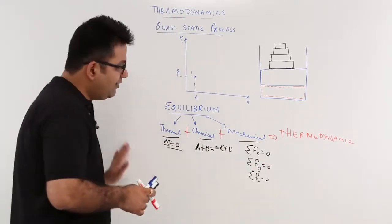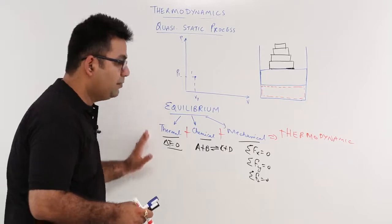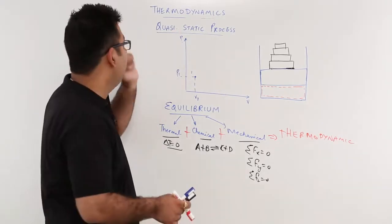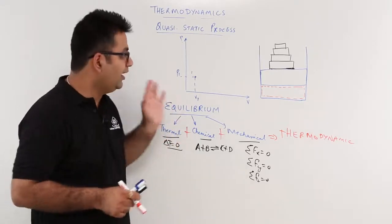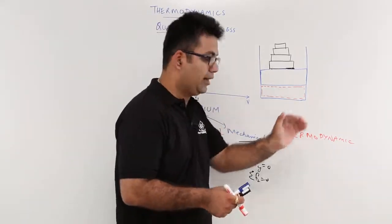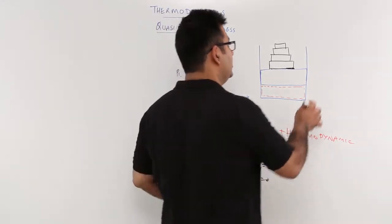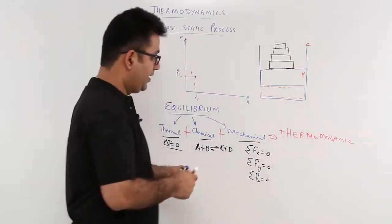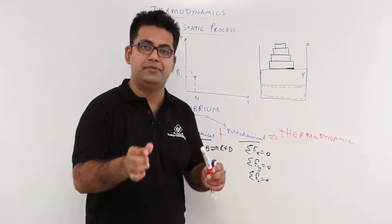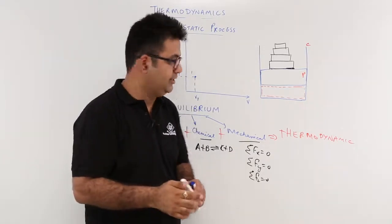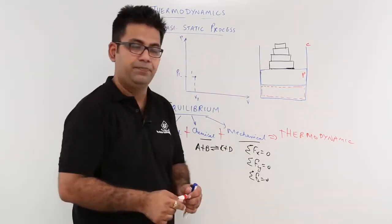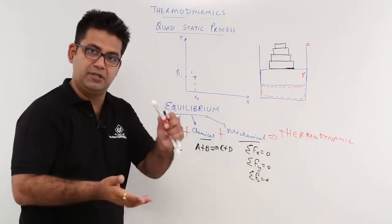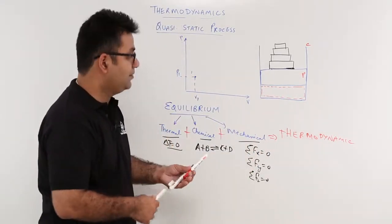After having understood the concept of equilibrium, let's move on to understand the quasi-static process. For that, let us have a piston-cylinder arrangement. This is the cylinder and this is the piston. On top of the piston, you have some small weights placed on it, and you have some gas trapped inside this piston-cylinder space.